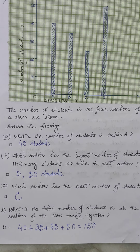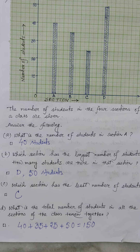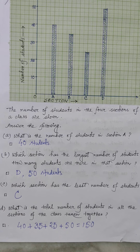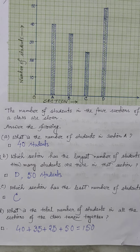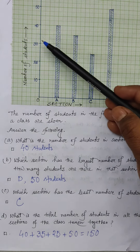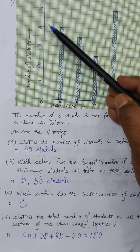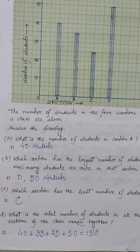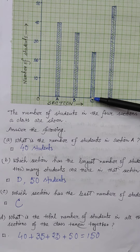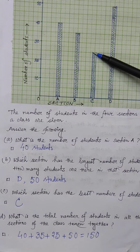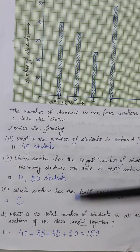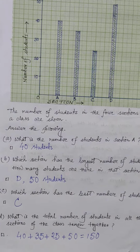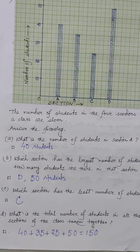Question d: What is the total number of students in all the sections of the class taken together? Section A has 40, section B — the height is in the middle of 30 and 40, so 35. Section C is up to 25. Section D is 50. So 40 plus 35 plus 25 plus 50 equals 150 students in total.